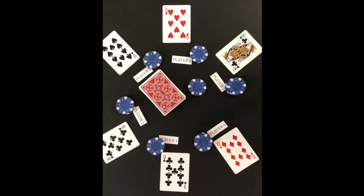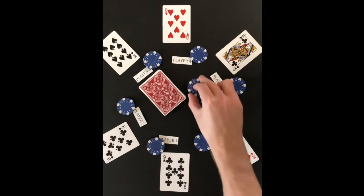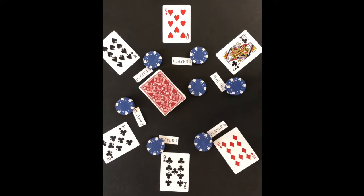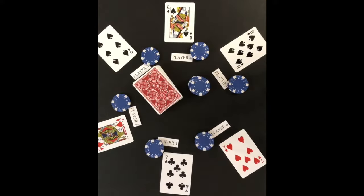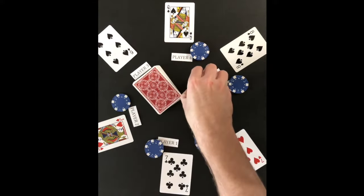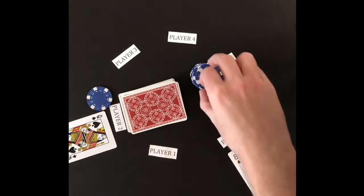If two players tie for the lowest ranking card in a round, they both lose a token. A variation can be played where tying players are safe and the lowest unique ranking card loses a token. Once a player is out of tokens, they are out of the game. The last player with tokens wins the game.